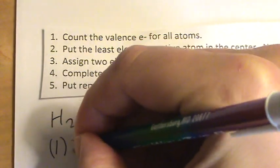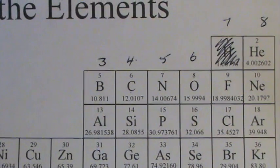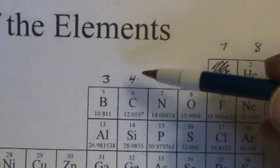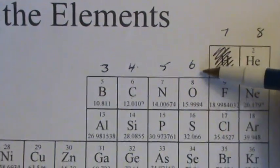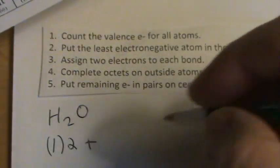But since there's two hydrogens, I need to multiply that by two. And then way over here, oxygen has six valence electrons. It's in group six, or 16, so it has six outer shell electrons.